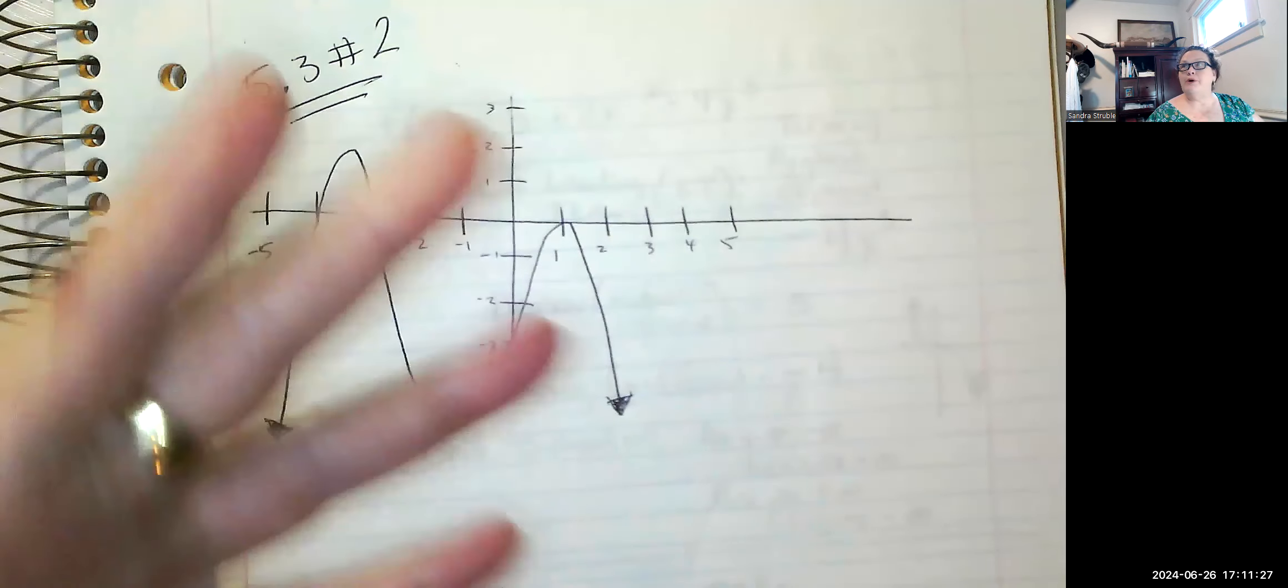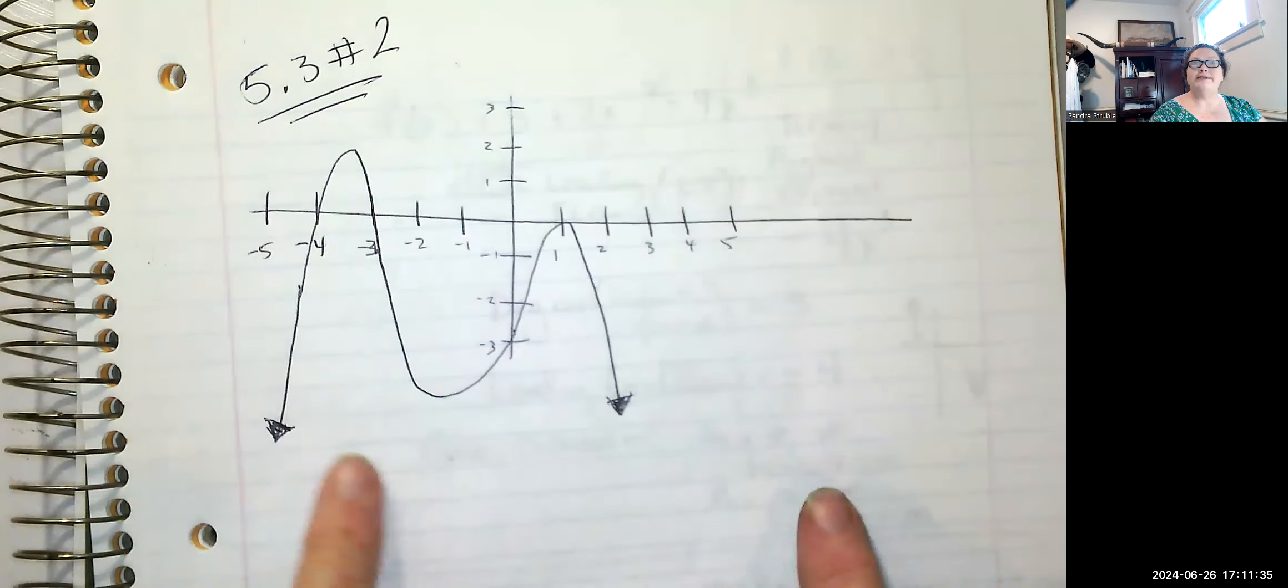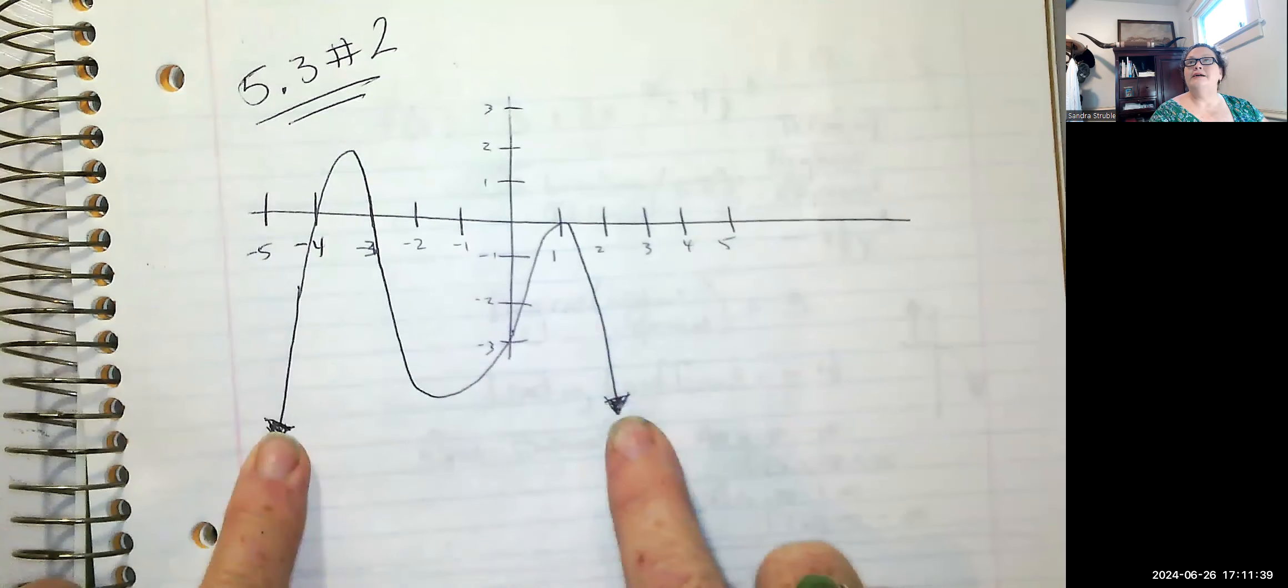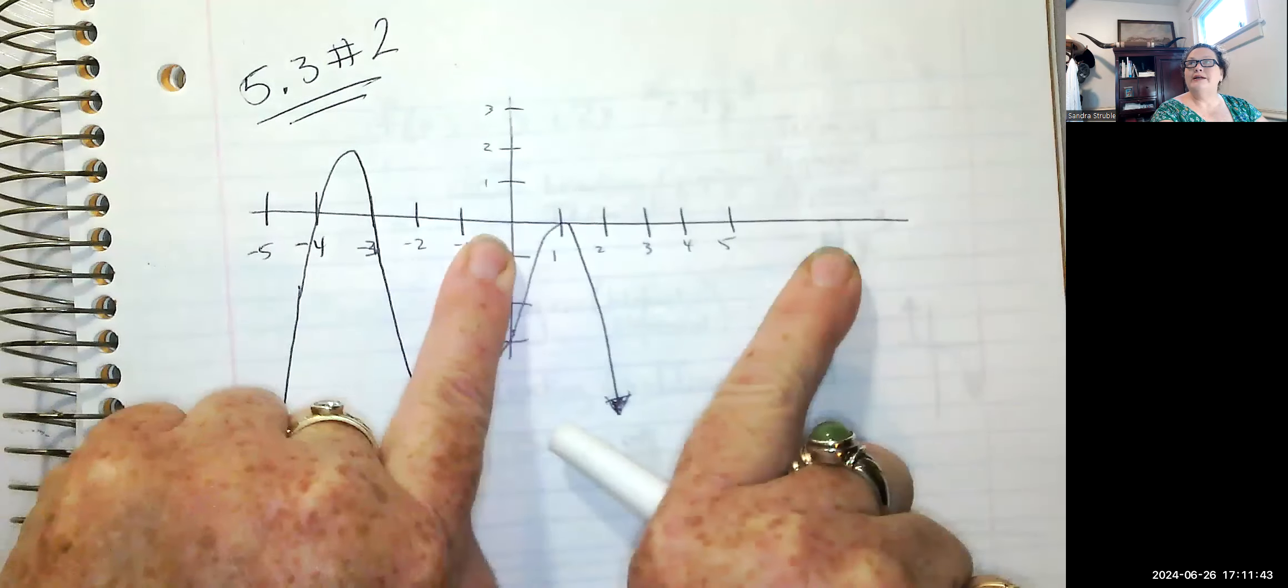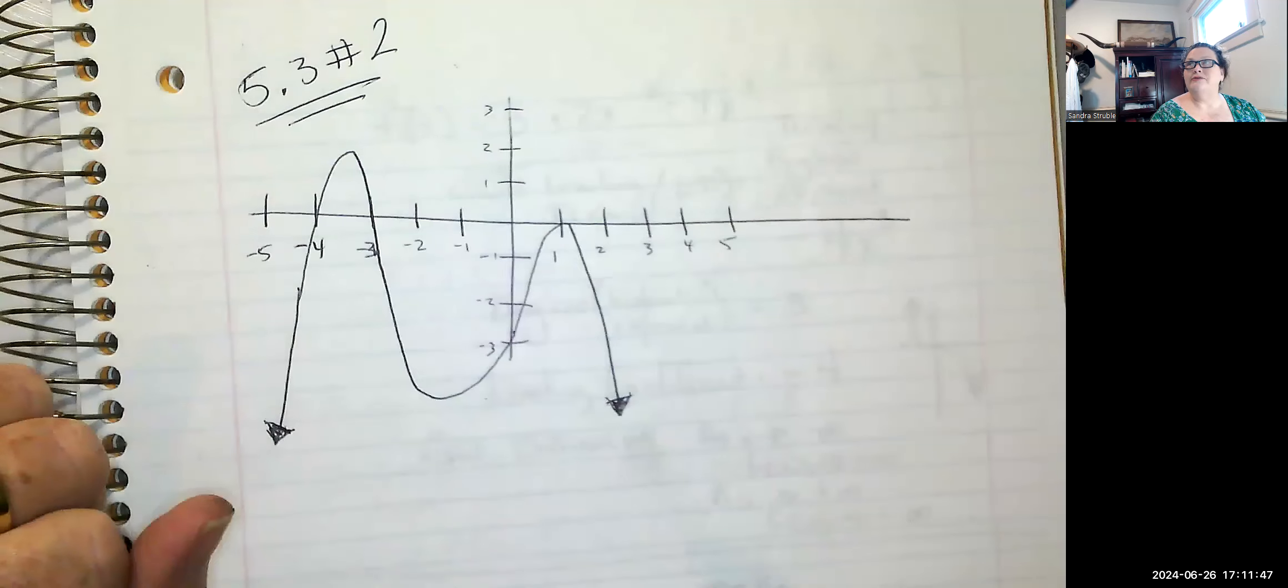So I'm going to give you a graph, something similar to this. When you see a graph like this, you need to automatically think about its end behavior. What are these arrows pointing at? They're both pointing towards negative infinity, whether you're going towards positive infinity or negative infinity with your X. The F of X is pointing towards negative infinity.